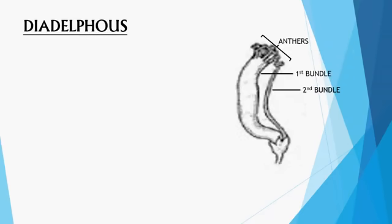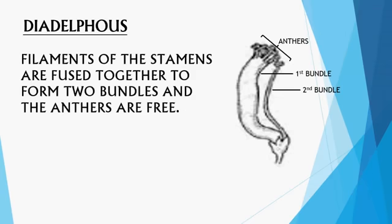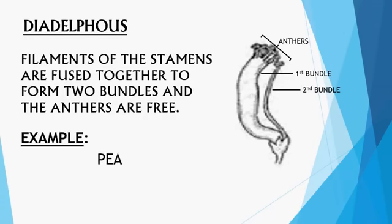The second type is diadelphous — 'di' means two. The filaments of the stamens are fused together to form two bundles, and the anthers are free. In the photograph, all the anthers are free while the filaments are united into two separate bundles. This condition is called diadelphous. Example: pea flower.